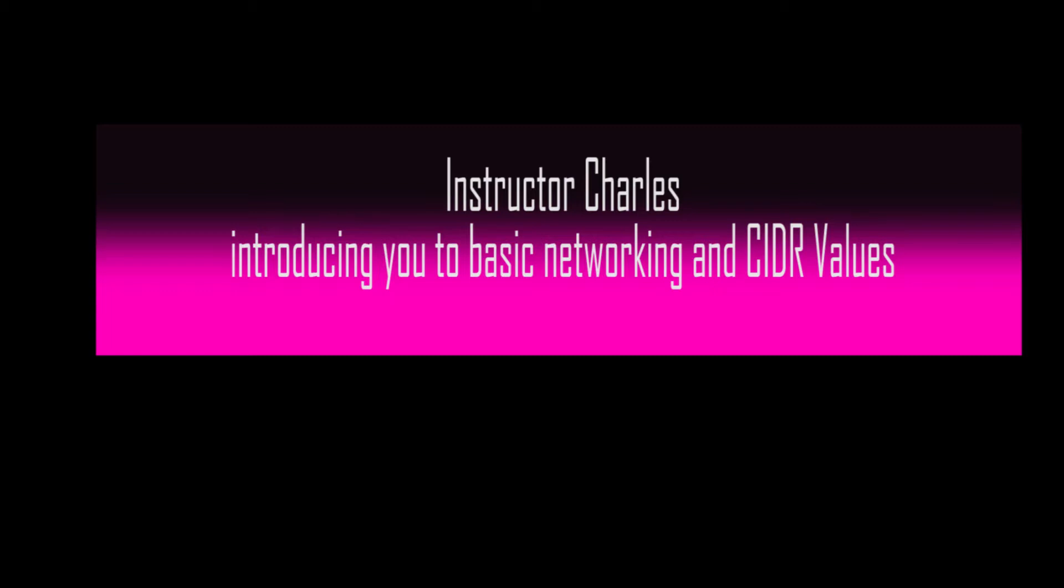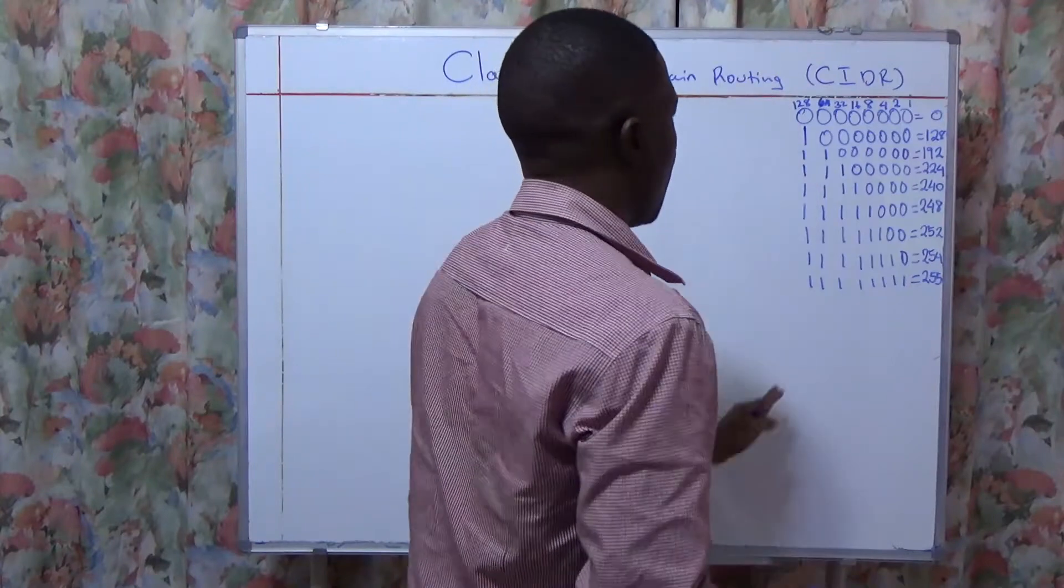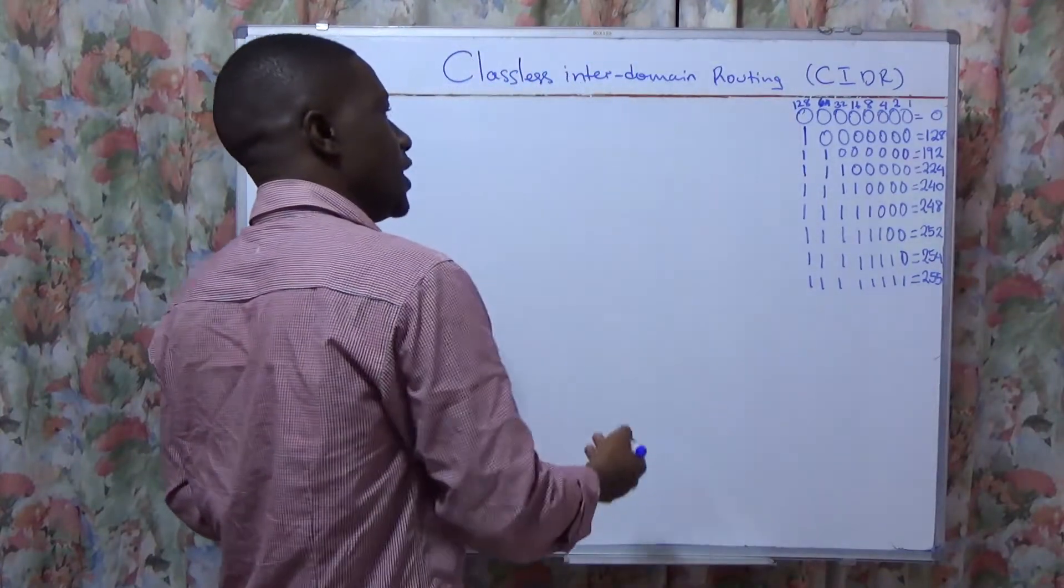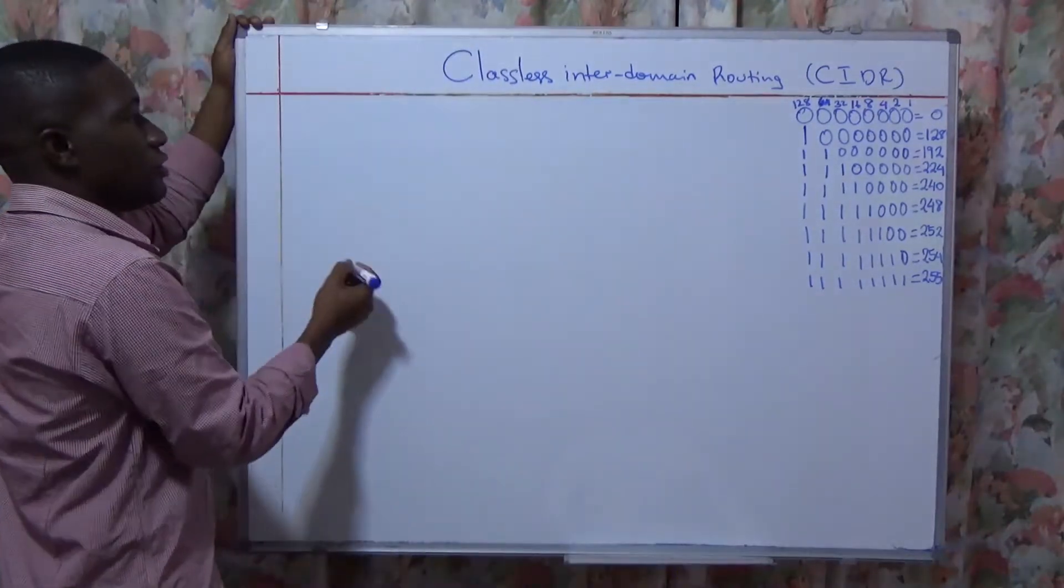Now we are going to look at our last coverage and it is known as CIDR value, and that is the Classless Interdomain Routing. These are the values we are going to have for us to see our new subnets through this table.